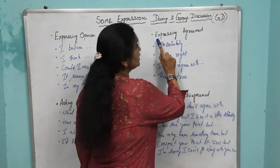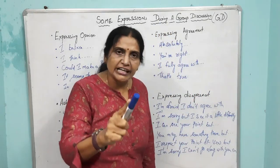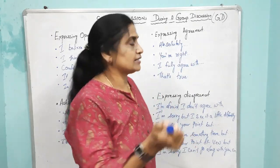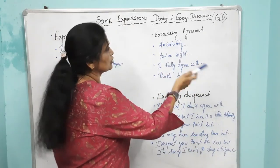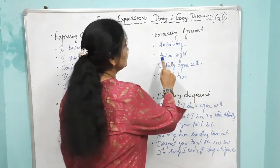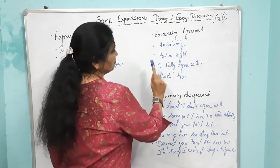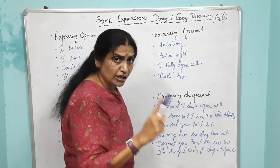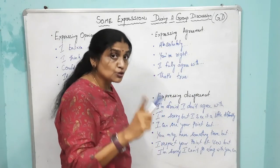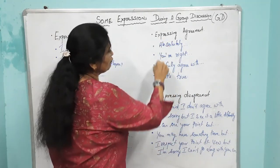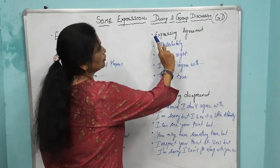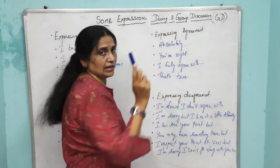Now let's look at expressing agreement. Somebody said a point and you like it and agree with it. Then, how do you say it? You can say: 'Absolutely, you are right,' 'I fully agree with you,' 'That's right,' or 'That's true.' These are the expressions you can put forth while expressing agreement.